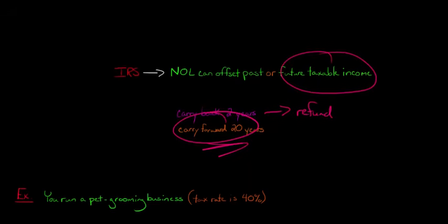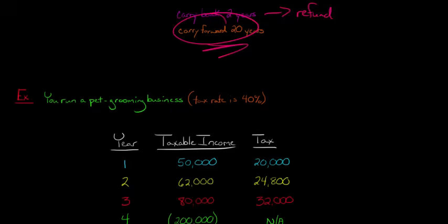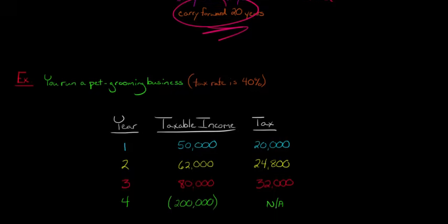Let's say that you run a pet grooming business and you have a really successful pet grooming business. You take care of cats, dogs, tarantulas, people's beloved pets, and you clean them up, make them look beautiful. The tax rate that your firm faces is 40%. Here's what happened, here's the financial situation for the last four years for your firm.